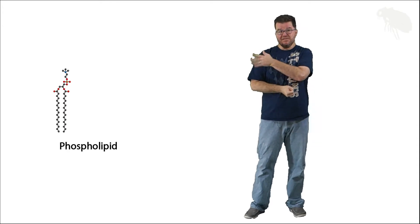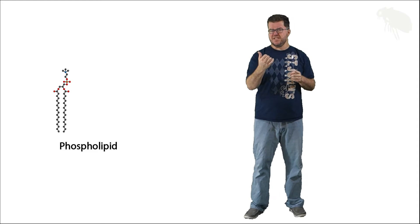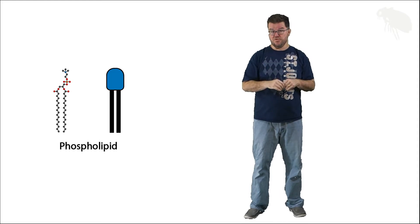Now to begin with, the most abundant molecule found in the plasma membrane is this guy. This is a phospholipid. Let's change it from that ball-and-stick model into its standard cartoon version.